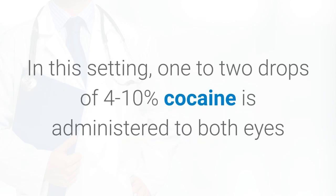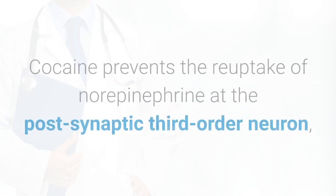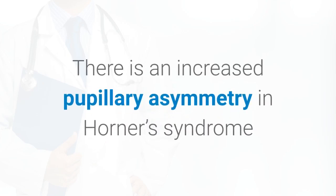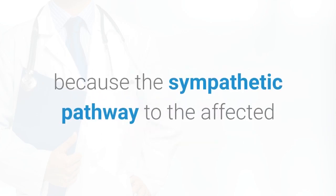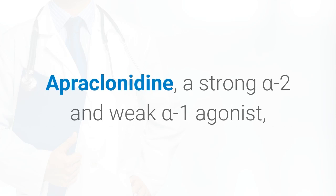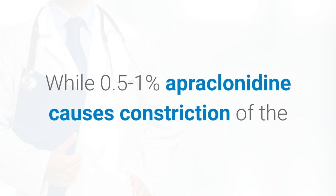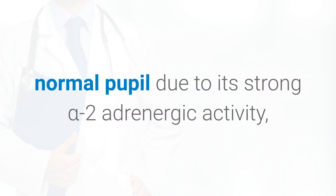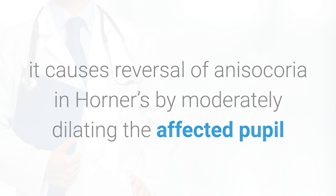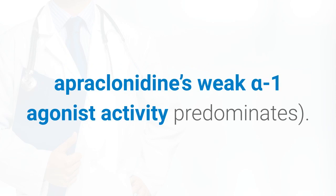In this setting, 1–2 drops of 4–10% cocaine is administered to both eyes and evaluated after 30–45 minutes. Cocaine prevents the reuptake of norepinephrine at the post-synaptic third-order neuron, allowing dilation of the normal pupil; there is increased pupillary asymmetry in Horner's syndrome because the sympathetic pathway to the affected pupil is low in norepinephrine. Apraclonidine, a strong alpha-2 and weak alpha-1 agonist, is a more readily available alternative. While 0.5–1% apraclonidine causes constriction of the normal pupil due to its strong alpha-2 adrenergic activity, it causes reversal of anisocoria in Horner's by moderately dilating the affected pupil that has undergone denervation supersensitivity, at which point apraclonidine's weak alpha-1 agonist activity predominates.